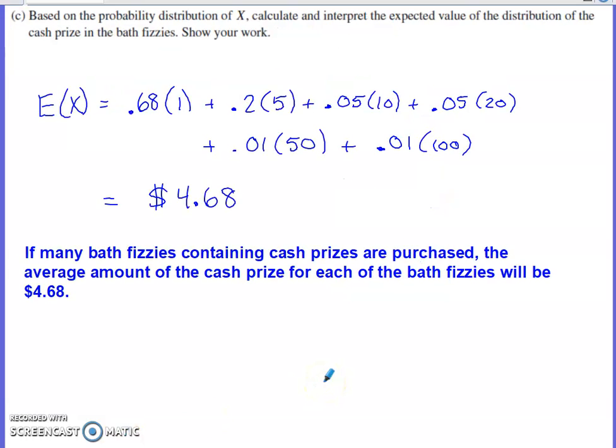Next part, based on the probability distribution, calculate and interpret the expected value of the distribution of the cash prize in the bath fizzies. Show your work. The way that you're going to find the expected value given a probability distribution table is you take the probability of an outcome times the numerical value of that outcome and add that to each of the other corresponding calculations. So the probability of $5 is 0.2 times the amount of that cash prize. What you end up with when you do that is $4.68.